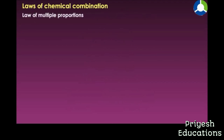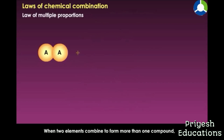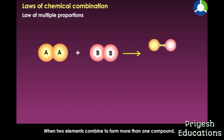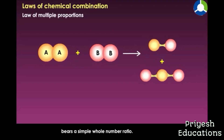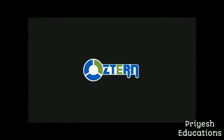Law of multiple proportions: when two elements combine to form more than one compound, the mass of one of the elements combining with the fixed mass of the other bears a simple whole number ratio.